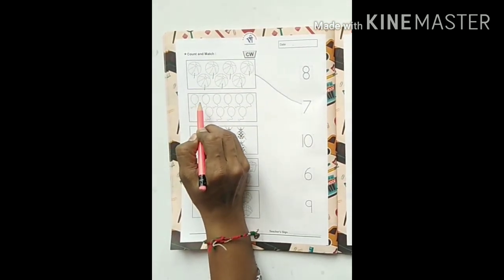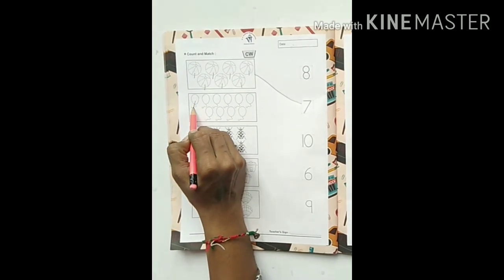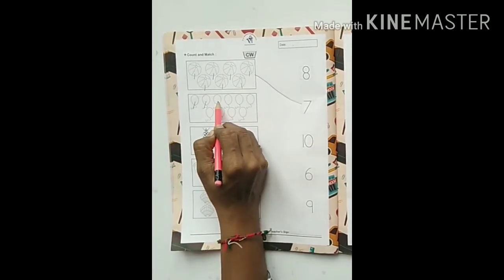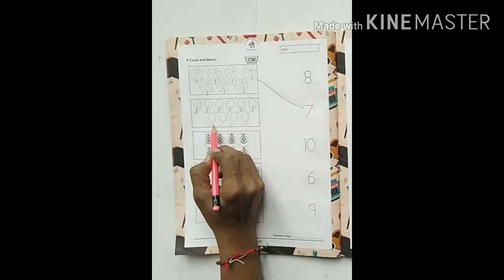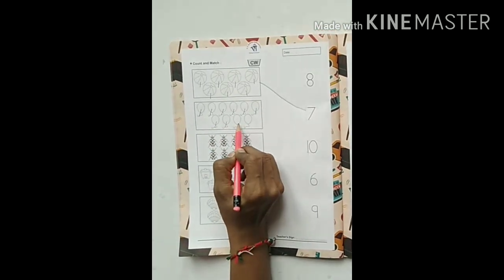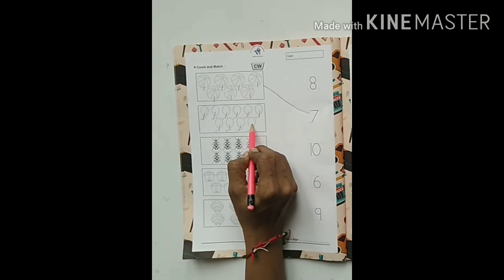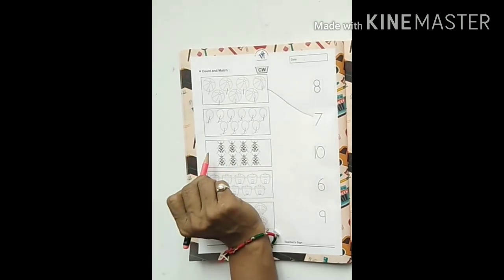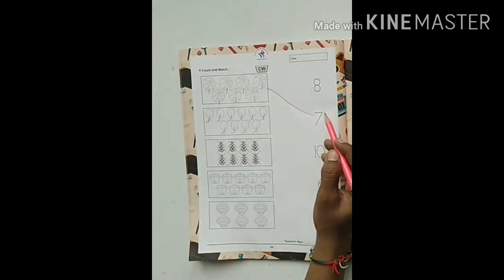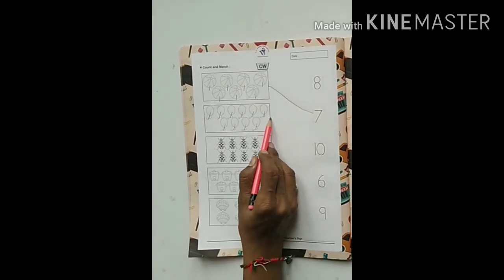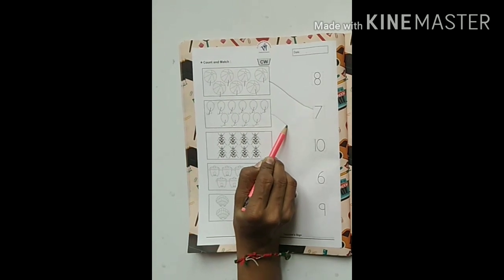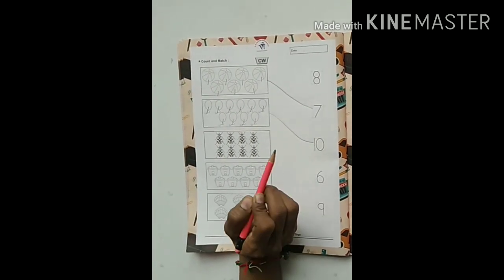Next are balloons. 1, 2, 3, 4, 5, 6, 7, 8, 9, and 10. Ten balloons. Now find where is the 10 number? Here. Now we have to match 10 balloons with 10 number.